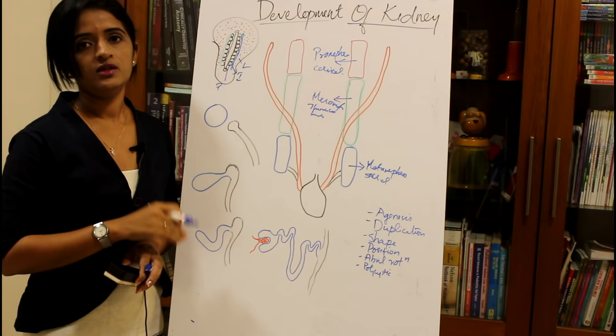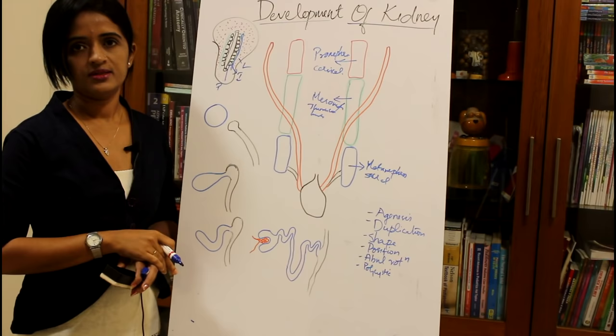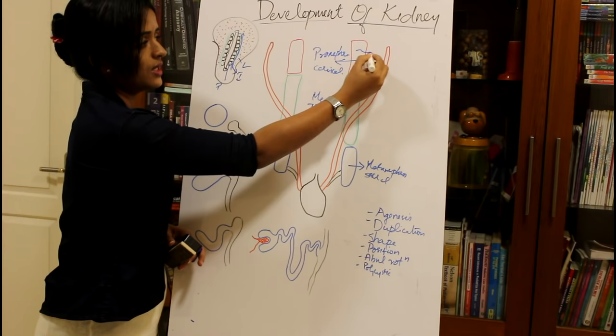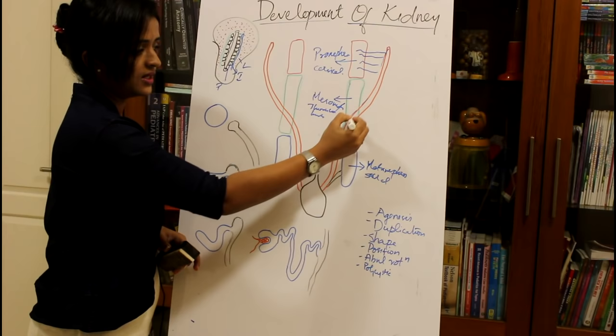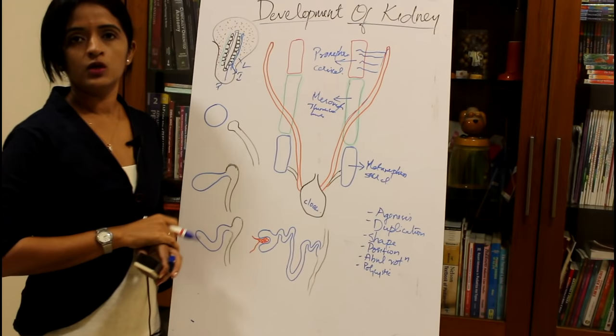The pronephros is seen during the early period of kidney development. As soon as it is formed, it degenerates. Several ductules develop from the pronephros, and a major duct developed from the pronephros gets connected to a dilatation known as the cloaca.